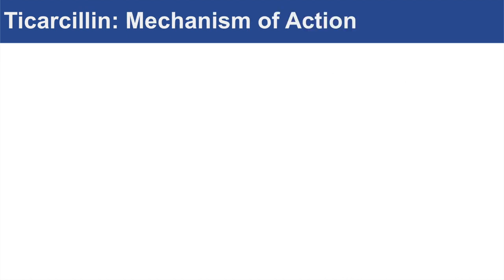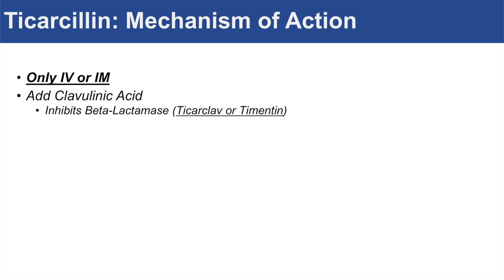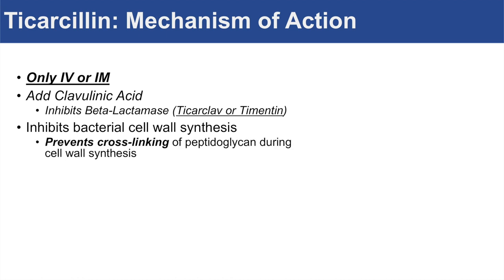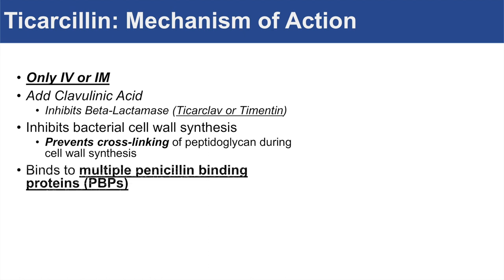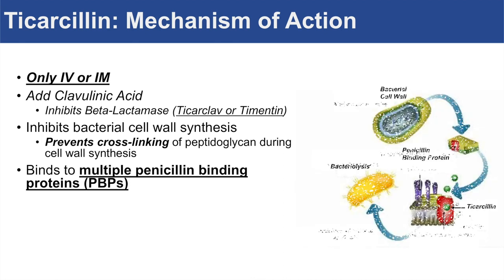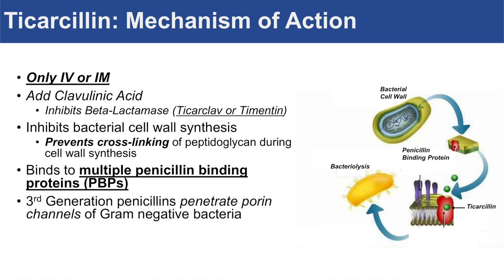So what's the mechanism of action of Ticarcillin? Ticarcillin can only be used through IV or IM — intravenous or intramuscular. It can be utilized with clavulanic acid, which can inhibit beta-lactamase of certain bacteria and expand its spectrum. Ticarcillin combined with clavulanic acid forms Ticarcillin-clavulanate, also known as Timentin. The main mechanism of action is to inhibit bacterial cell wall synthesis, like other penicillins. It prevents cross-linking of peptidoglycan during cell wall synthesis and binds to multiple penicillin-binding proteins.